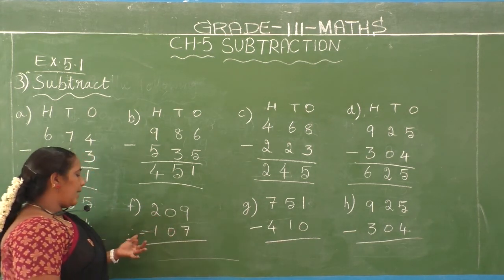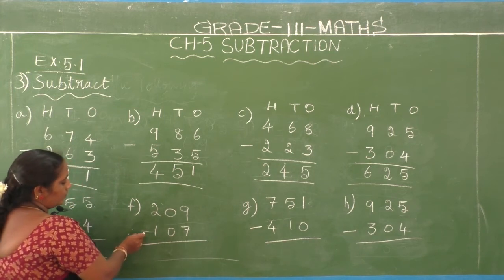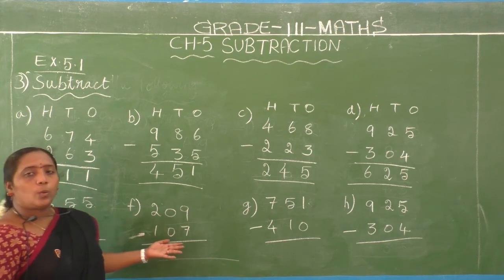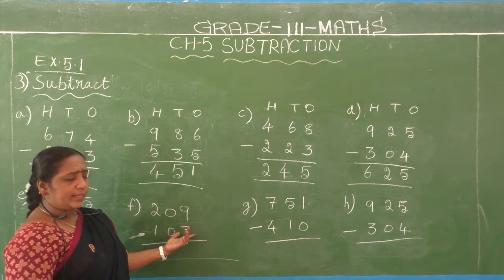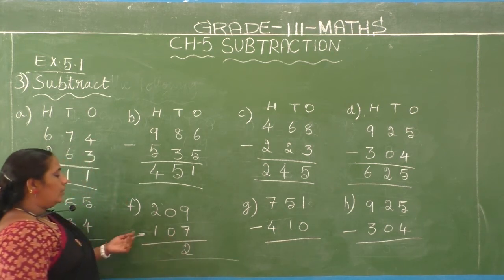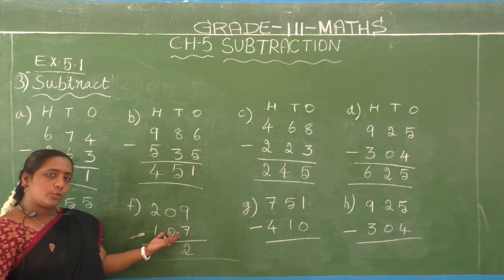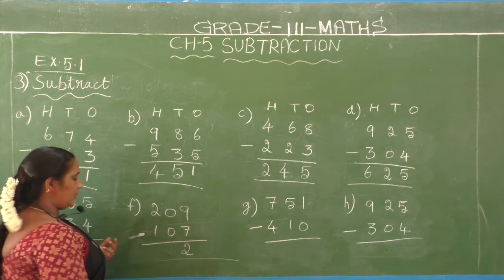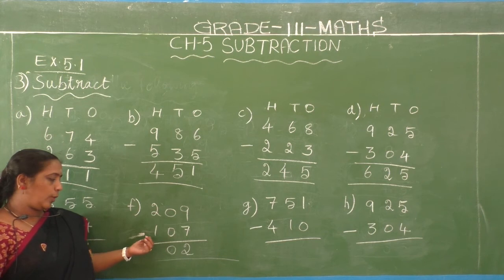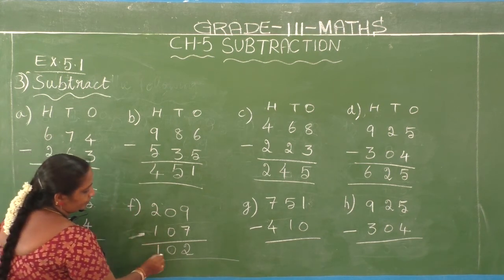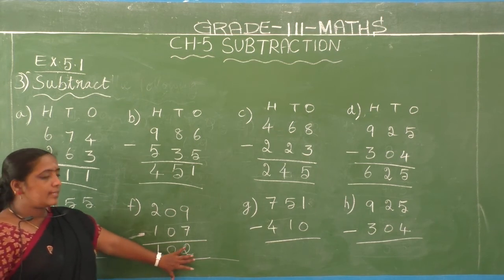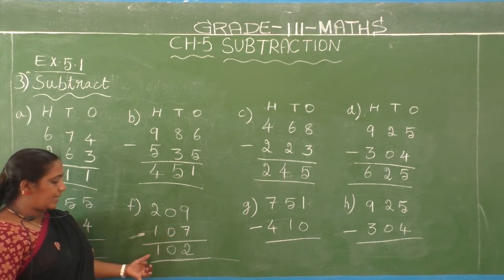F1: 209 minus 107. Ones place — second number 7, first number 9: 7 after 8, 9. Difference is 2. Tens place — second number is 0, first number also 0: 0 minus 0 equals 0. Hundreds place — second number 1, first number 2: 1 after 2. Difference is 1. So 209 minus 107 equals 102.